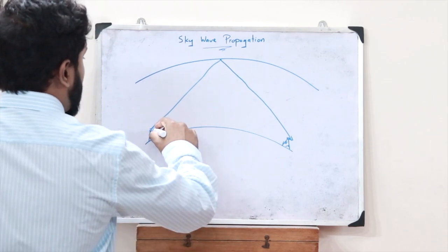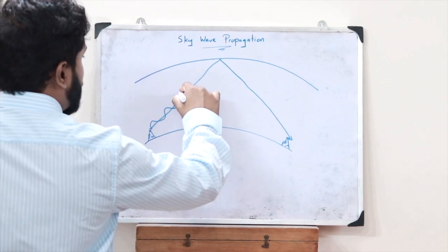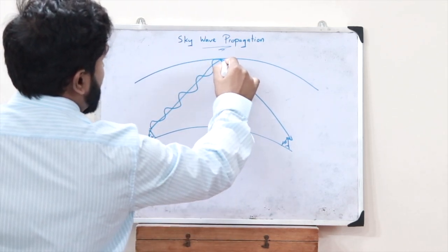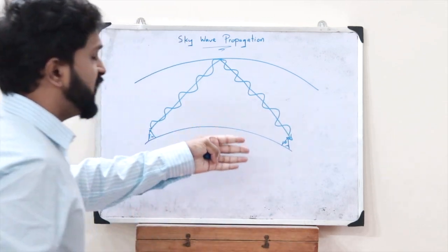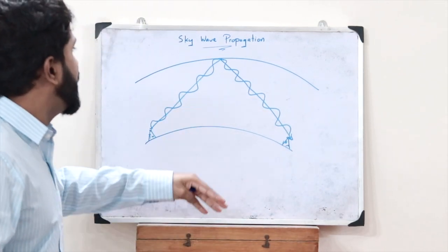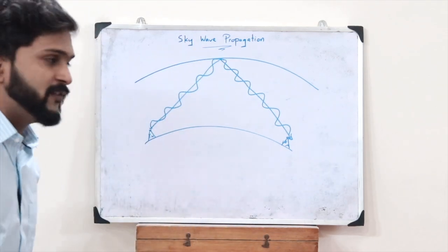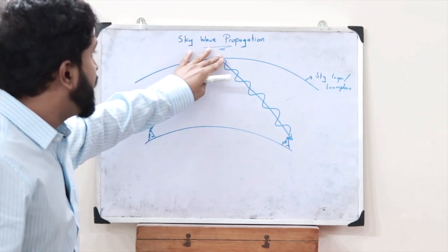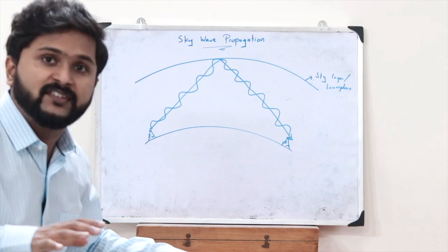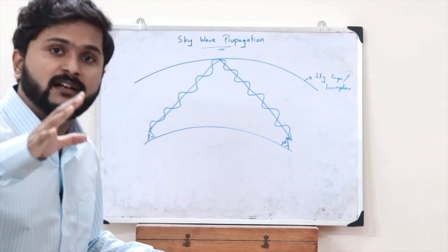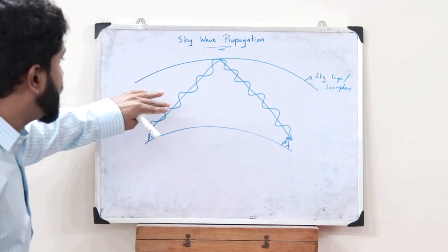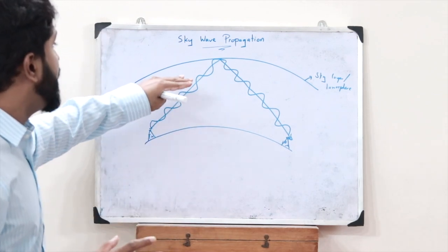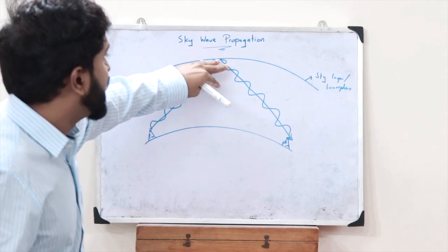The signal sent by the transmitter travels upward, reaches the ionospheric layer, gets reflected back, and is received by the receiver. This is what we refer to as sky wave propagation. For the signal to reflect at the ionosphere, it must have a frequency ranging between 2 and 30 megahertz. Only if the frequency is between 2 and 30 megahertz will it be reflected by the ionosphere and received by the receiver.